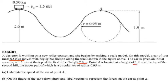The second hill is 1.9 meters above the ground. When the car is released at the top of the first hill, it has an initial velocity of 1.5 meters per second. The radius of the second hill is 0.95 meters. They ask you to calculate the speed of the car at point A.